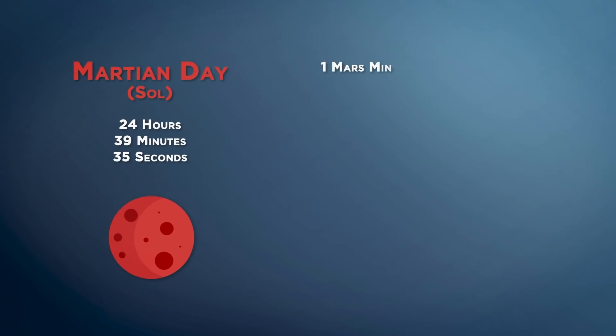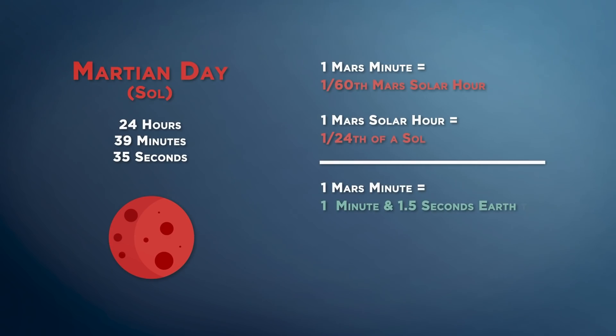Now, going back to what a Mars minute is, a Mars solar minute will be 1/60th of a Mars solar hour, and a Mars solar hour will be 1/24th of a Mars day. So, after doing some quick math, we can determine that a Mars minute is actually equal to 1 minute and 1 and a half seconds of Earth time, and a Mars hour is actually equivalent to 1 hour, 1 minute and 39 seconds on Earth. Who wouldn't want to have a little extra time in the day, after all?